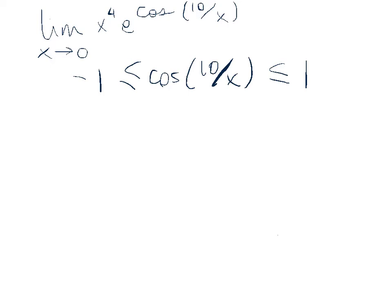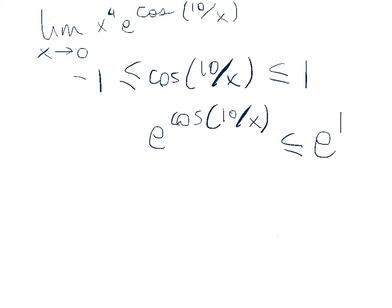Using this fact, we can now establish an upper bound on e to the cosine of 10 over x. Since cosine of 10 over x is less than or equal to 1, the largest that the exponent of e can be is 1. Therefore, e raised to the cosine of 10 over x has to be less than or equal to e to the 1. Similarly, the smallest that cosine of 10 over x can be is negative 1, so e to the cosine of 10 over x has to be greater than or equal to e to the negative 1.